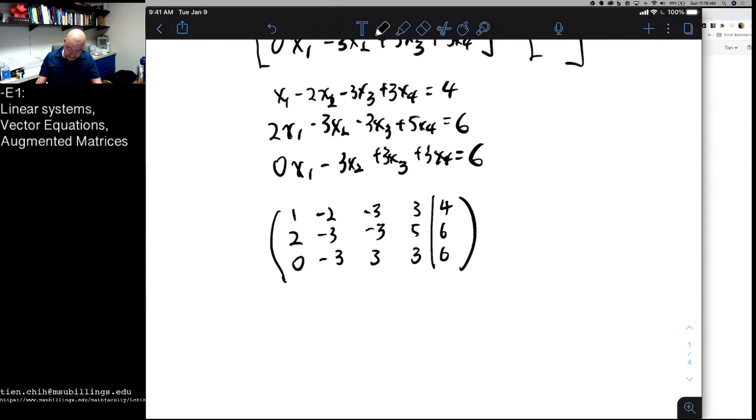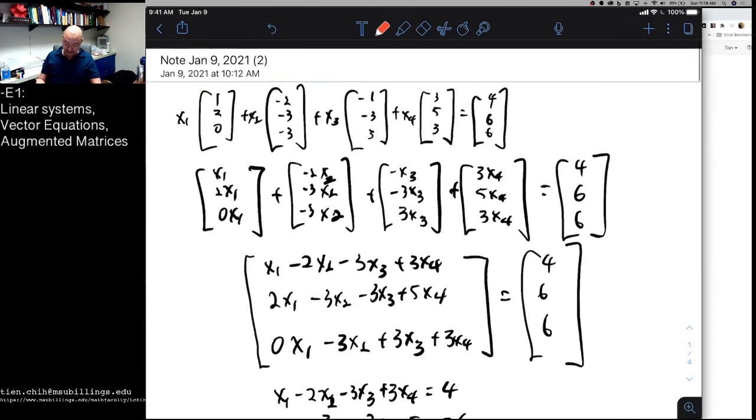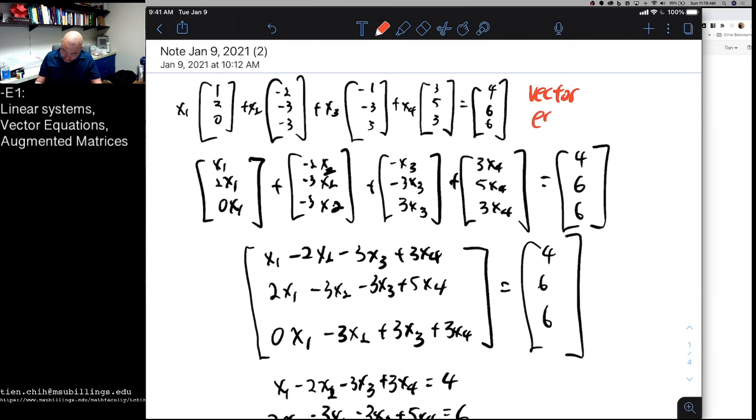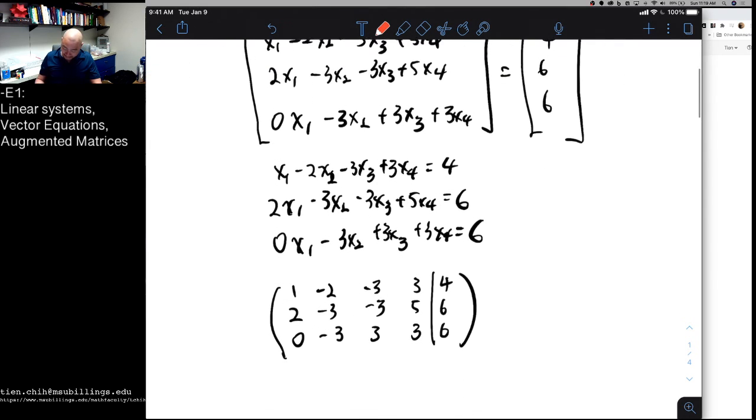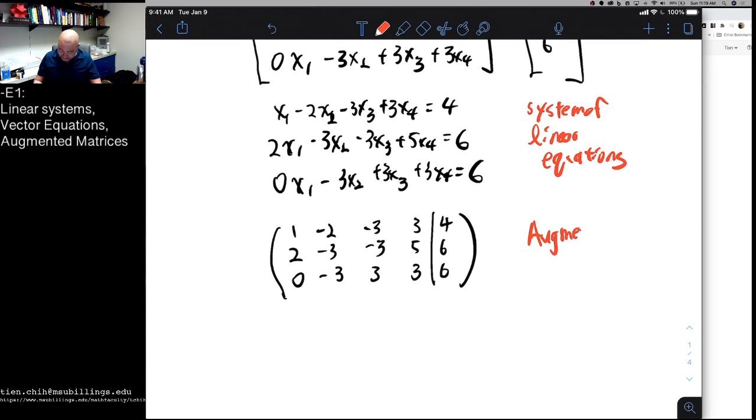And so now, we have three different expressions of the same facts. We have our vector equation that we started off with, we have our system of linear equations that we achieved through our vector algebra, and then we converted that into an augmented matrix. So what we're going to find throughout this course is that we'll often be given scenarios that look like one of these three situations, and it will be convenient for us to be able to convert between one of these expressions and other expressions in order to do something and then convert it back. And so this is a good skill to have throughout this course. All right, thank you very much.